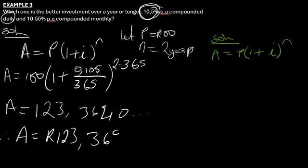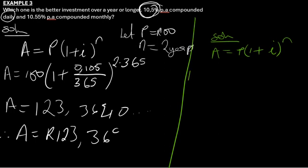Then let's pick green. So A is going to be equal to, I will use the same value of P which is 100, 1 plus, then in the place of i here, this is compounded at a rate of 10.55 percent which is equal to 0.1055 divided by, it's compounded monthly so let's divide by 12, and here I have 2 years so I'll have 2 times 12.